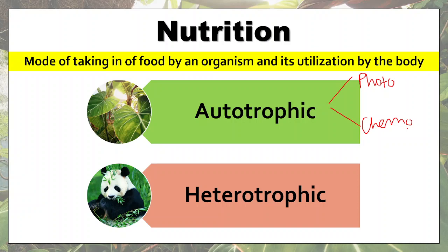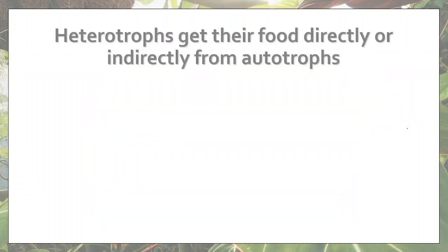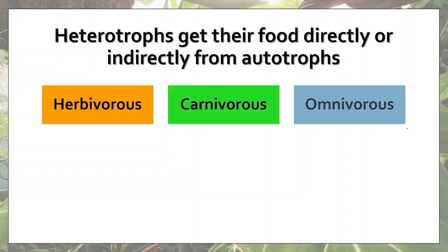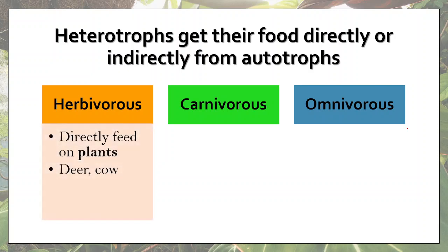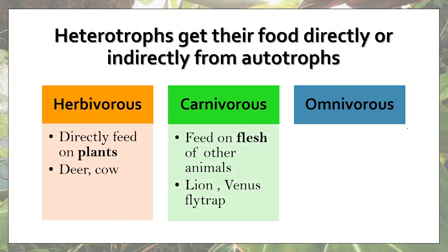Heterotrophic nutrition is the other type of nutrition in which the organism cannot synthesize its own food and therefore has to depend on other living organisms to get its food. Once it has got its food, it is going to break it down to derive energy from it. All heterotrophs are ultimately dependent on autotrophs for their nutrition. Animals can be herbivorous, carnivorous, or omnivorous depending on what they eat. Herbivorous animals directly feed on plants — for example, deer and cow. Carnivorous animals feed on the flesh of other animals — for example, lion.